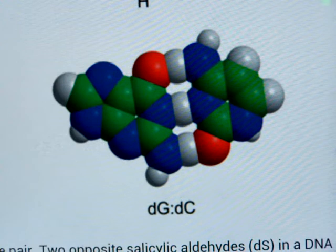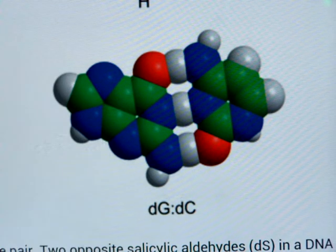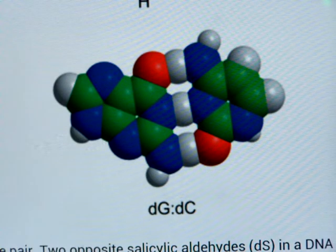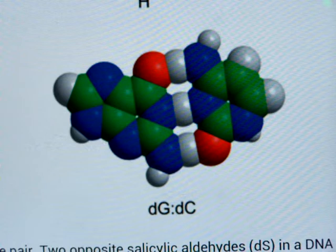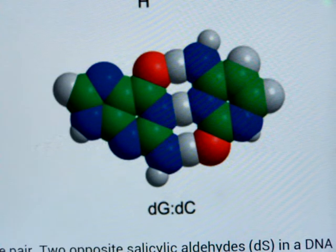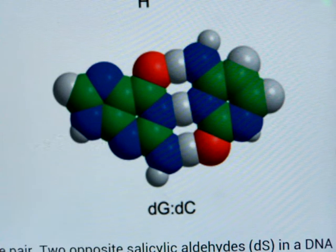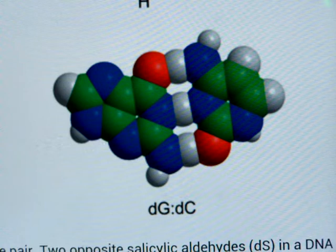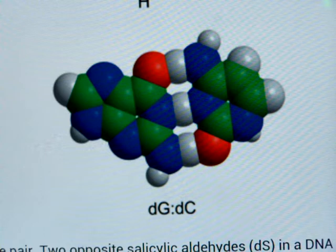Here we have the G and C, the guanine and the cytosine. And they join together to form this base pair. Now all these base pairs are made up of a combination of carbon, nitrogen, oxygen and hydrogen atoms. And as you can see, they are arranged hexagonally and pentagonally.